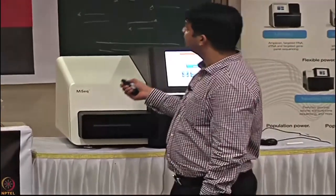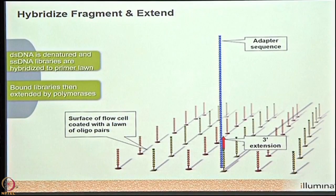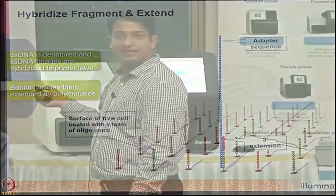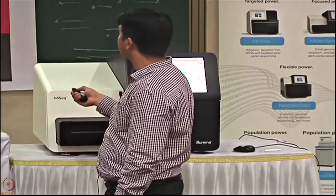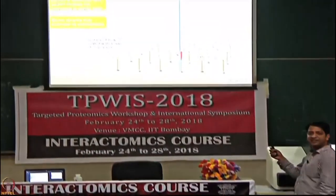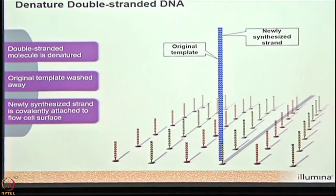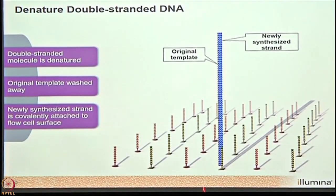Once denatured, the fragments bind to the lawn — one end binds covalently via the complementary oligo using hydrogen bonding. We then extend the ends with DNA polymerase, creating a new complementary strand. We then wash away the original template — it is held only by weak hydrogen bonds — while the new strand, covalently attached, is retained.